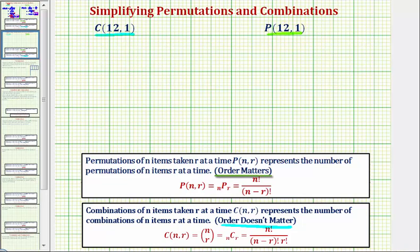So normally, we expect the number of permutations to be more than the number of combinations, since for a permutation the order matters, and for a combination the order doesn't matter. But notice in this case, we're starting with 12 items in both cases, and we're only taking one at a time.